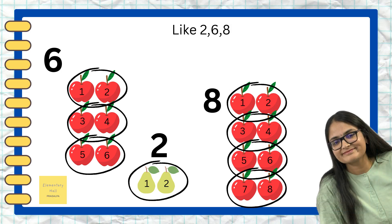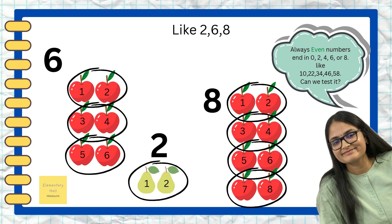Now remember: even numbers end in zero, two, four, six, or eight — like in numbers 10, 22, 34, 46, 58. Can you see the numbers are ending in zero, two, four, six, eight? All numbers which end with zero, two, four, six, or eight are even numbers.